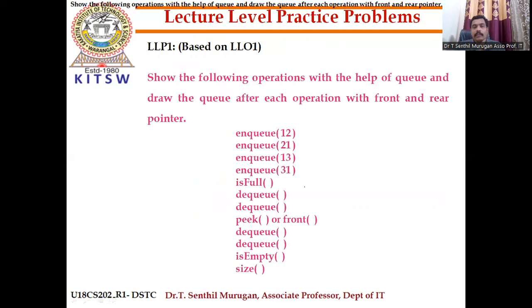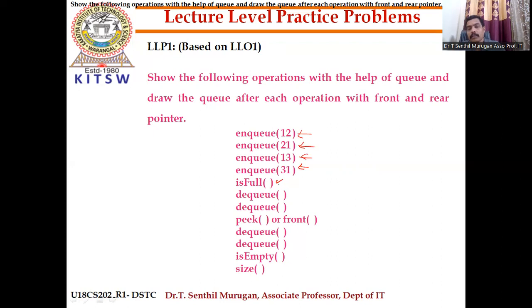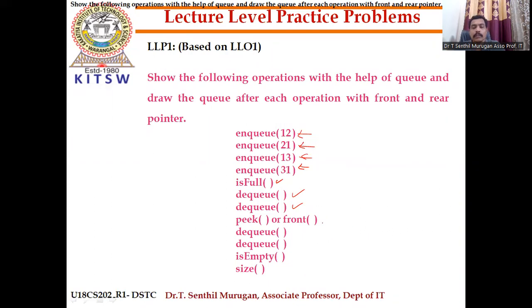For the lecture-level practice problem: perform the following operations and draw the queue after each operation showing the front and rear pointers. Initially insert four elements (EnQueue four times), then check if the queue is full — if full, print overflow. Perform DeQueue two times, check what the front pointer is pointing to, perform DeQueue two more times, then check if the queue is empty — if empty, print underflow. Finally, print the size of the queue.